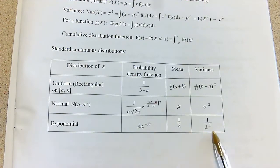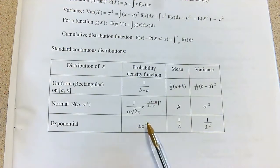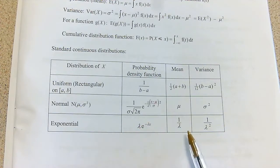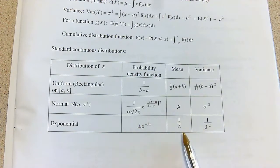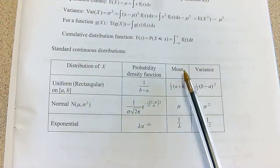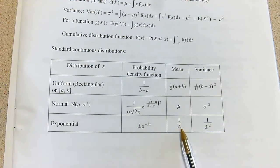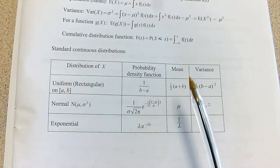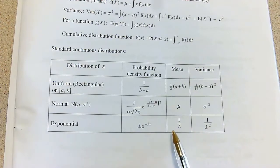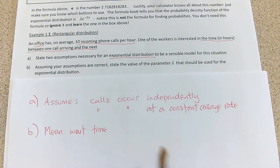The formula book has two useful pieces of information about exponential distributions — it pretends to have three useful pieces, but one is completely useless, you never look at that. The useful pieces are: we'll come to the variance later, but for now the mean is 1 over lambda. So if I know what the mean is, I can work out what lambda is.